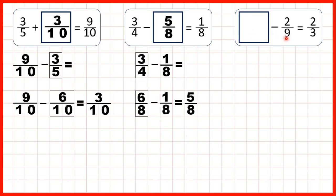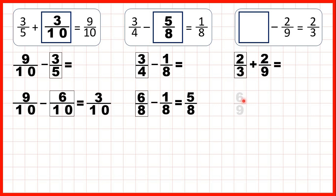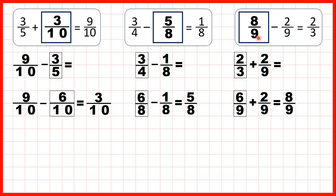Now, something minus 2 ninths equals 2 thirds. Here it's the first number in the subtraction problem that's missing, so we have a missing minuend. We need to use addition to find our missing number, because subtraction problems can be read backwards as addition problems. So if we work out 2 thirds plus 2 ninths, that will give us our missing number. We need the denominators to be the same, so instead of 2 thirds we can have 6 ninths — that's equivalent because 3 times 3 is 9 and 2 times 3 is 6. Now we can add 2 ninths: the denominator stays the same and 6 plus 2 is 8. So our missing fraction is 8 ninths.